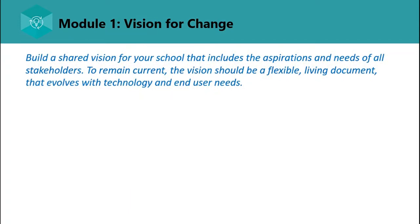Let's start with Module 1: Vision for Change, the first area under leadership and policy. For your school, you need to build a shared vision that includes the aspirations and needs of all stakeholders. To remain current, the vision should be a flexible, living document that evolves with technology and end-user needs.